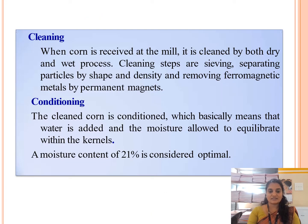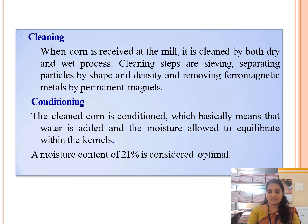In the cleaning process, when the corn is received at the mill after cultivation, it is cleaned by both dry and wet processes. The cleaning steps are: sieving, separating particles by shape and density, and removing ferromagnetic metals by permanent magnets. This is necessary because corn cultivated from the land may contain foreign particles like metals and glass pieces, which must be removed before conditioning.